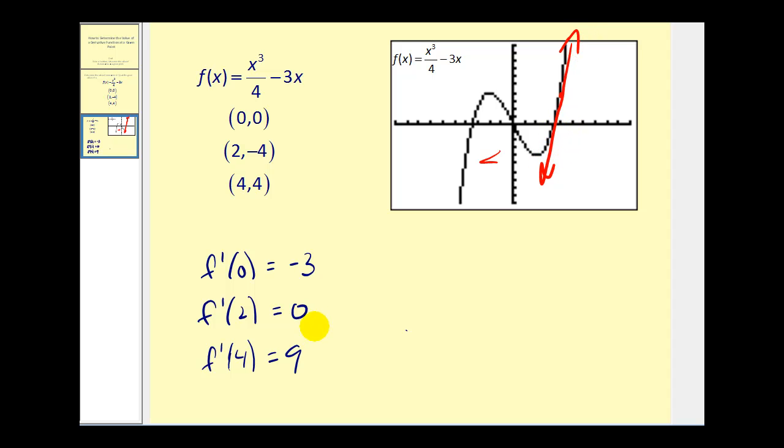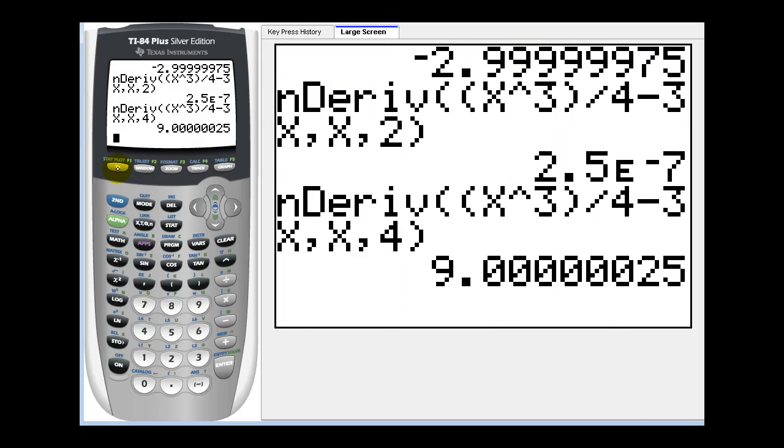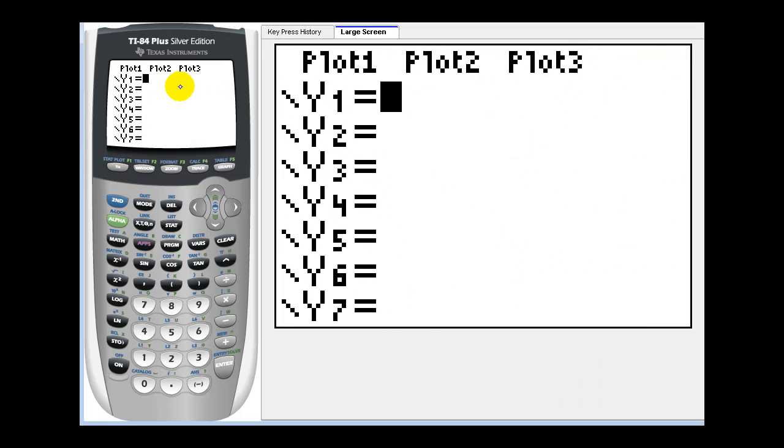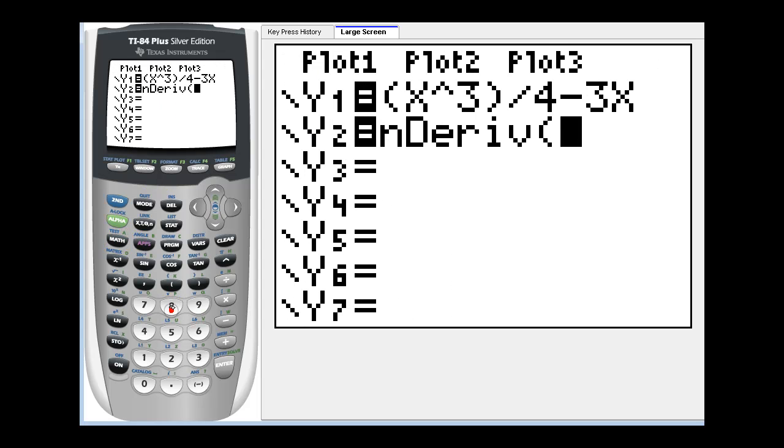I want to show you one other way we can do this on the graphing calculator. If we press Y= and type in the function into Y1, and then in Y2, we're going to type in the notation for the derivative function evaluated at x. So we'll press math 8. Our function is Y1.